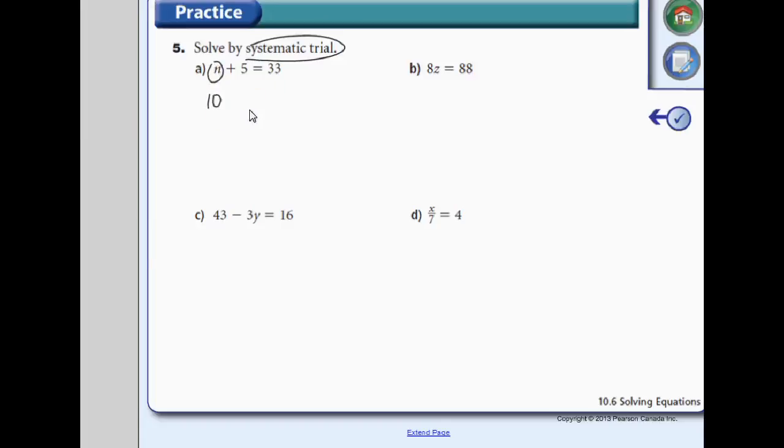Systematic trial means to try. So n plus 5 is 33. So let's try 10. 10 plus 5 gives us 15. Nowhere near. Let's try 20 as n. 20 plus 5 equals 25. We're still nowhere near. Let's try 30. If n was 30. 30 plus 5 equals 35.